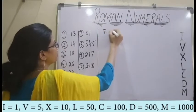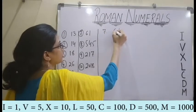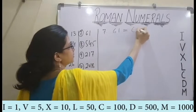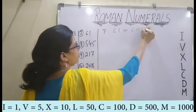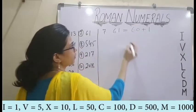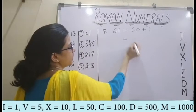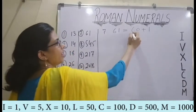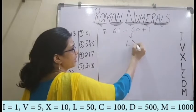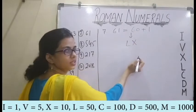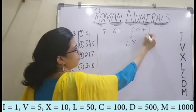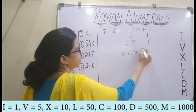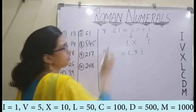Seventh question, which is 61. So how do I write it? 60 plus 1. For 60, we have 50 plus 10, so that gives us LX. And for 1, I have I. So LXI is 61.